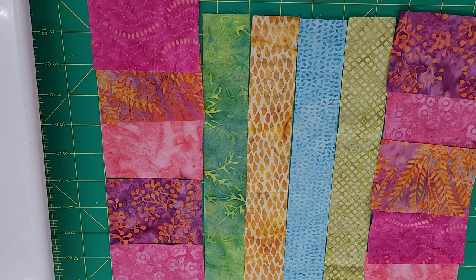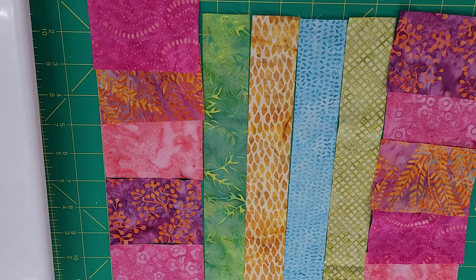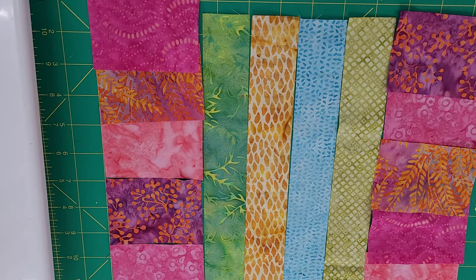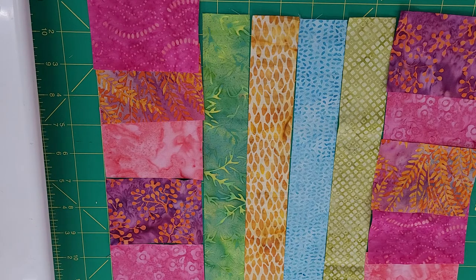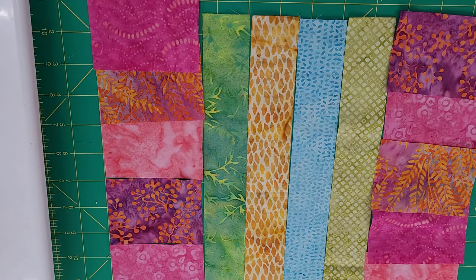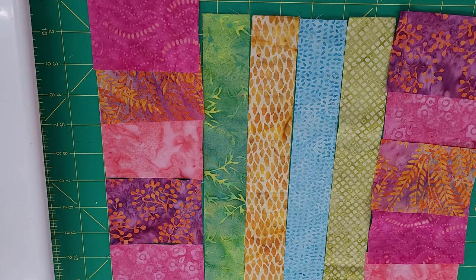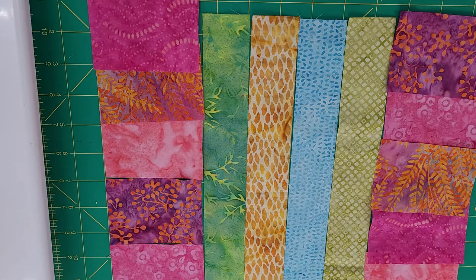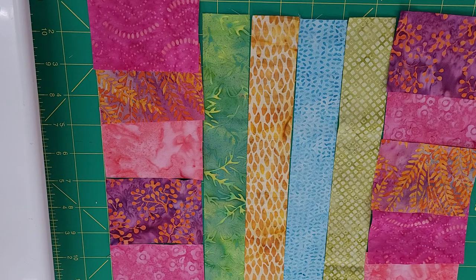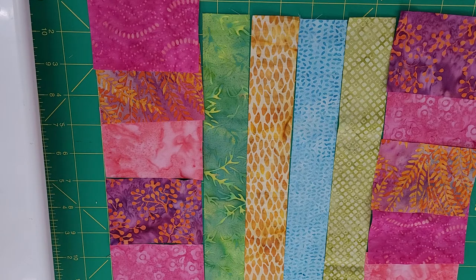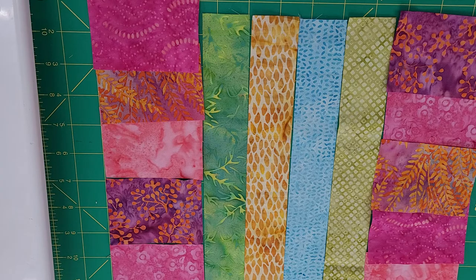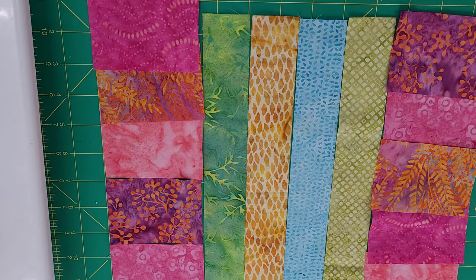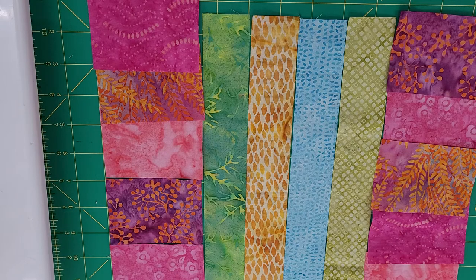We'll provide nine patterns all together. Three will be houses, three will be trees, and three will be paths and gardens. The idea is that we want you to make at least one block, and the block should finish at ten inches, which would be ten and a half inches before it's sewn to the next block.